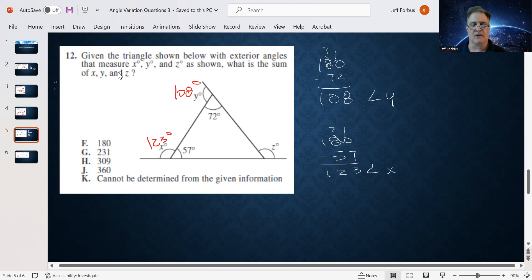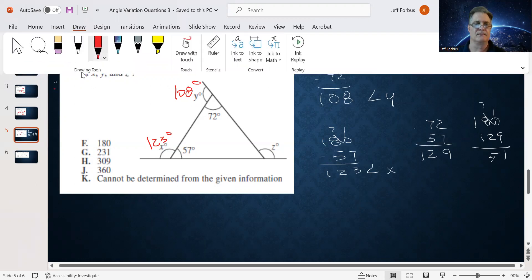Now we need to get Z. So we're going to use the angle 72 and 57, add those together. So 72 and 57, that's nine, seven and five is 12. That's 129 degrees that we're showing. So 180 minus 129, that's going to be one, seven minus two is a five, so 51 degrees. So inside the triangle, we have 51 degrees right here.